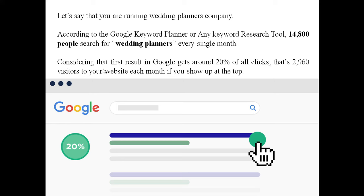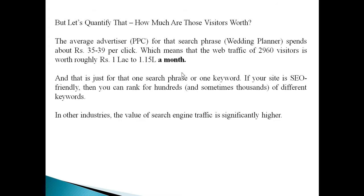For example, if you run a wedding planner company, according to Google Keyword Planner, nearly 14,800 people search for 'wedding planners' every month. If you rank first on Google, you get approximately 20% of those clicks — that's about 2,960 visitors to your website each month, completely free. That's the power of being in the top position.